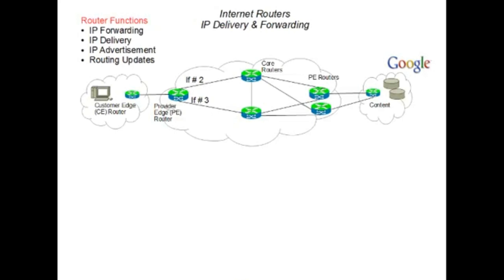That delivery is done not by forwarding but by resolving the link layer addresses we've seen before — so that's a delivery function as opposed to a forwarding function. The third function is advertisement: IP routers have routing tables which have lists of routes or IP address ranges that are known, and they become known through an advertising process. The routing update function is how those routing tables get updated and how the algorithms choose which outgoing interface is best for a particular incoming packet.